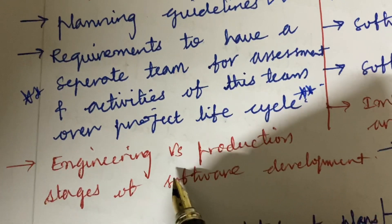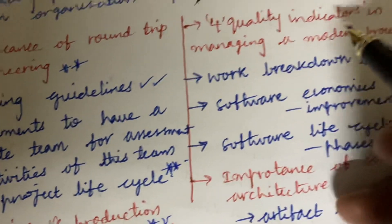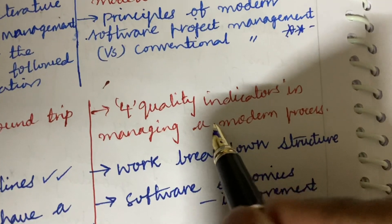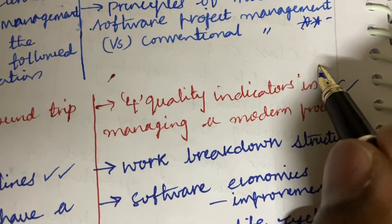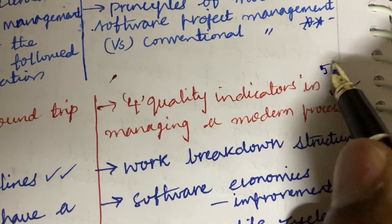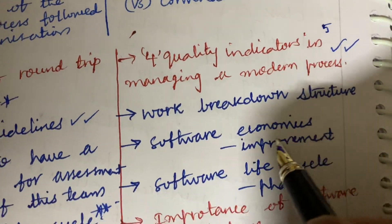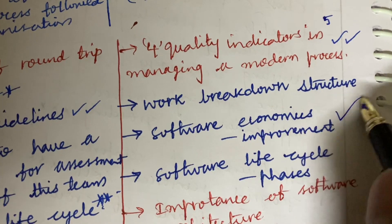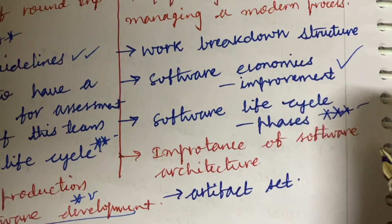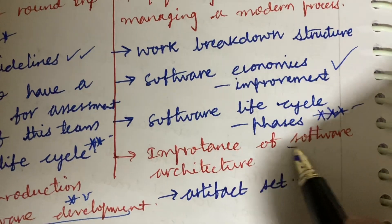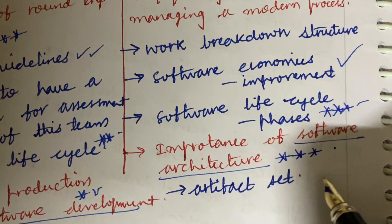Engineering versus production stages of software development is also said to be a five-mark question. Four quality indicators in management and managing a modern process is also said to be a question. Work breakdown structure, software economics and its improvement, and the software life cycle phases are said to be top most short questions. Importance of software architecture is said to be a gunshot question, and artifact set is said to be a three-mark question.